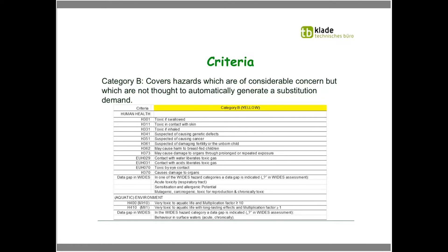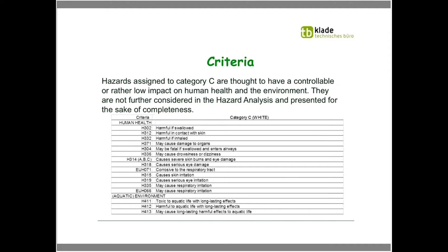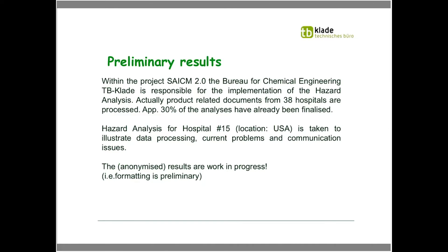Moving on to Category C — indicated with white color, while Category A is red and Category B is yellow. Category C hazards are considered at a controlled level or with rather low impact on human health and environment. They do not play a significant role in the hazard analysis and cause no action. In summary, the hazard analysis evaluates environmental and health-related hazards of disinfectants. For a more detailed description of the full analysis — ingredient analysis and product benchmarking — I refer to my webpage, where more extensive explanation is available.